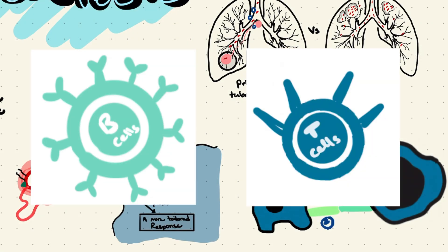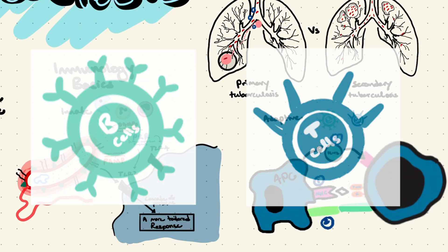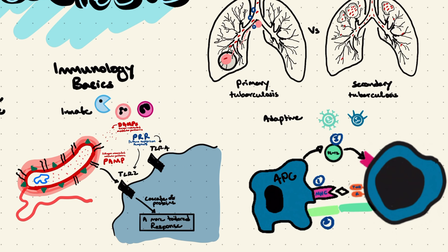T-helper cells can then rally specific B-cells or cytotoxic T-cells to fight the infection. Because the adaptive immune system uses a very specific antigen presented by the innate immune system, it can mount a much more specific response compared to the innate immune system, which relies on broader molecular patterns. That was a lot, but hopefully you now have a better understanding of the immune system so we can move on to tackle the immune response against Mycobacterium tuberculosis.